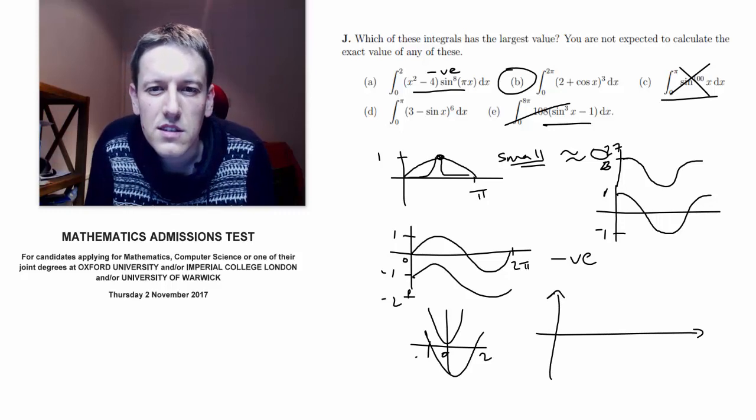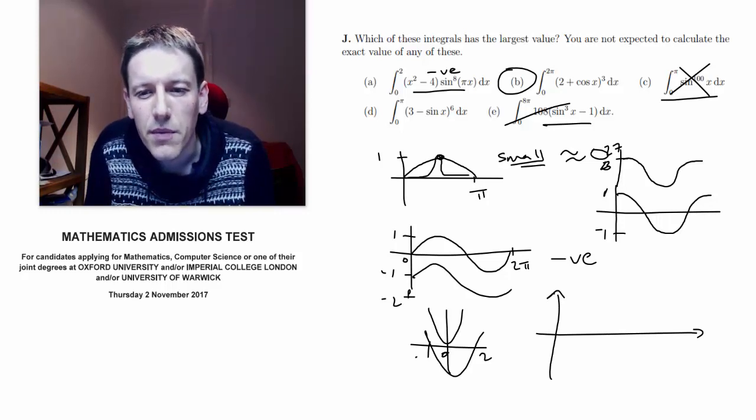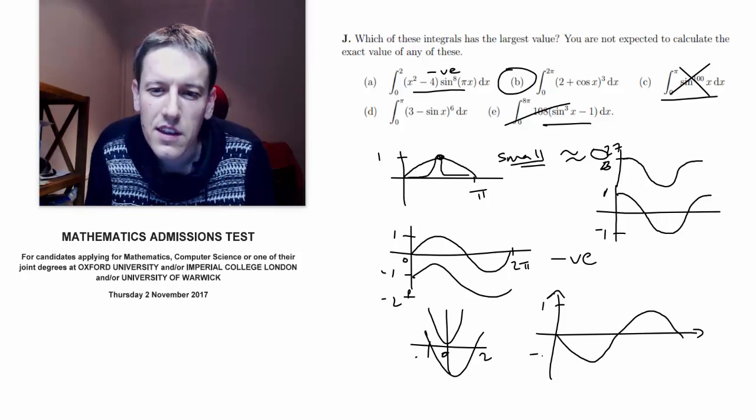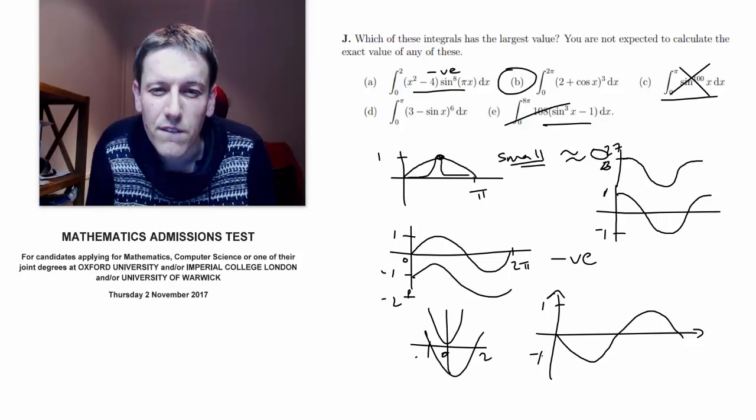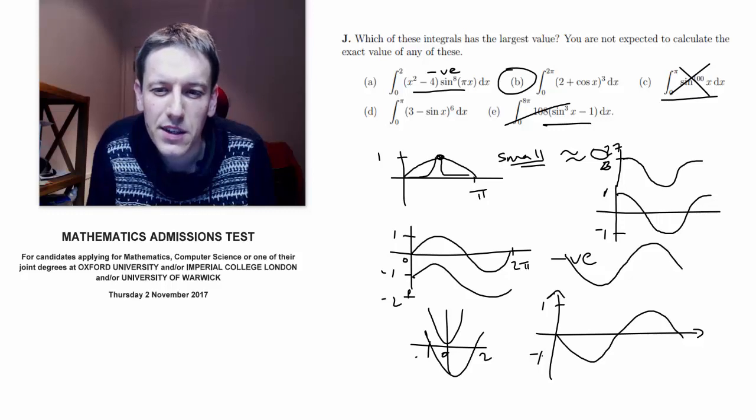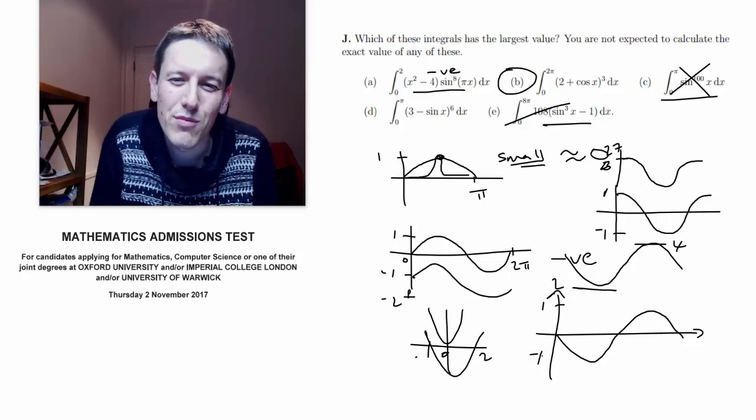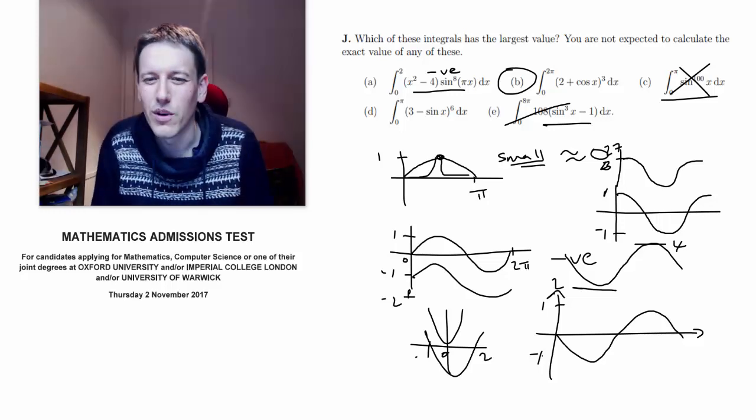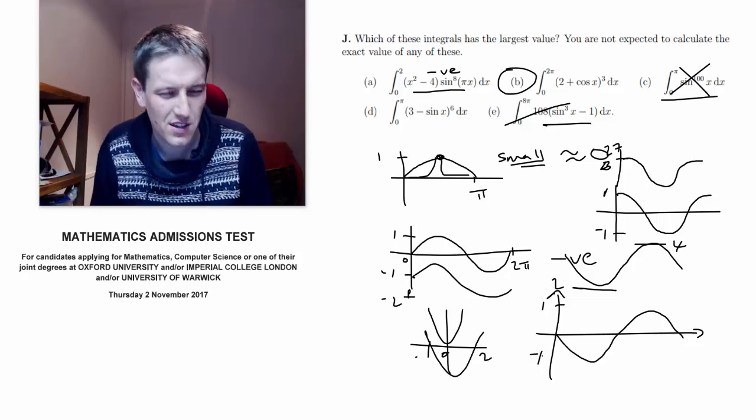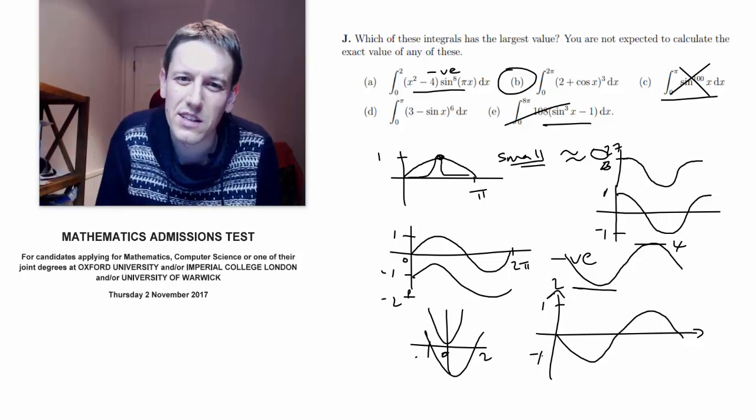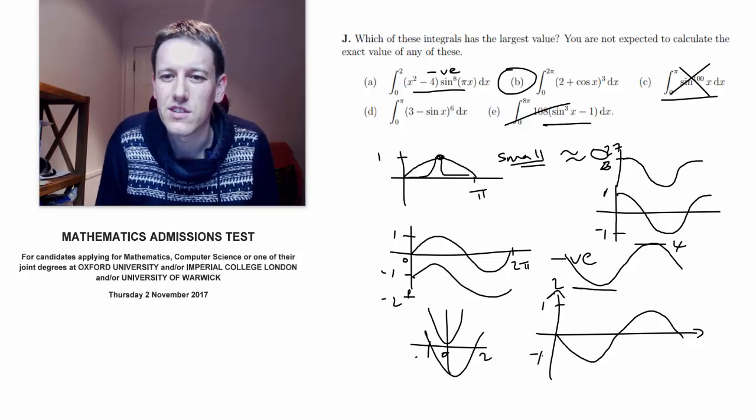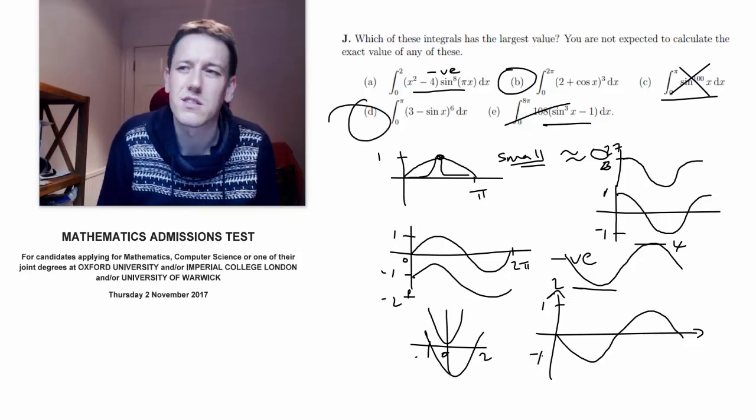And let's just look at d then. 3 minus sin x to the 6. Again, if I've got minus sin x is going to look like this. So I would do minus sin x plus 3. That's going to take these two values between 2 and 4. So it's going to look something like this. And it's going to be going from 2 at the bottom here to 4 at the top. Then I'm raising these numbers to the power of 6. So all of the y coordinates here are going to be between 2 to the 6 and 4 to the 6. So these are just going to be way bigger than 27. So without doing any more precise calculations, I can see that the largest integral, the largest area that I'm looking at above the x-axis here is going to be d.